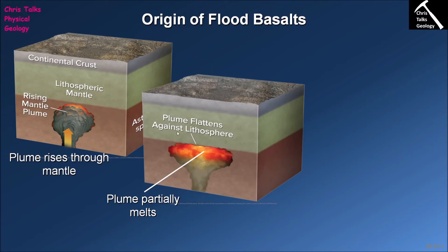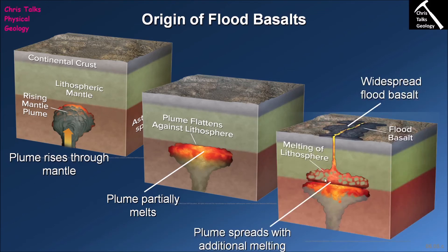Additionally, we have ultramafic mantle rocks as part of the lithospheric mantle, and the heat from the plume also begins to melt some of the lower-temperature minerals in the lithospheric mantle. So we end up with mafic magma being generated from the melting of the mantle plume and from the partial melting of the lithospheric mantle. This produces a huge quantity of basaltic magma that rises to the surface and pours out via fissures in the form of flood basalts. The only mechanism that really allows you to produce these large volumes is a mantle plume, so flood basalts and mantle plumes are intimately related.